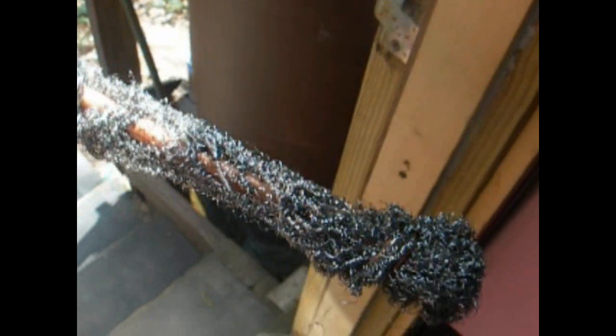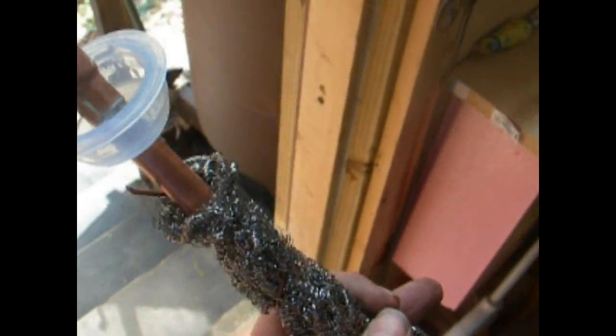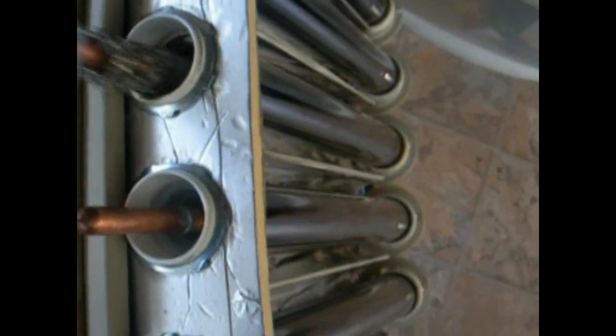One other thing they say to do is get some stainless steel wool that you can buy at the dollar store and just wrap your heat pipe in that. Then you just slide it down into your tube.